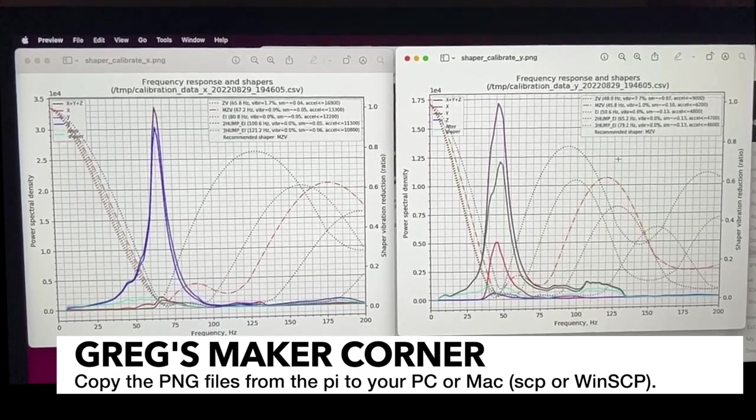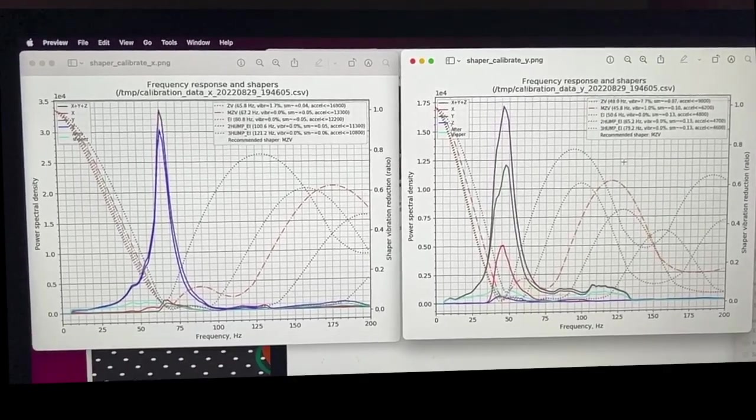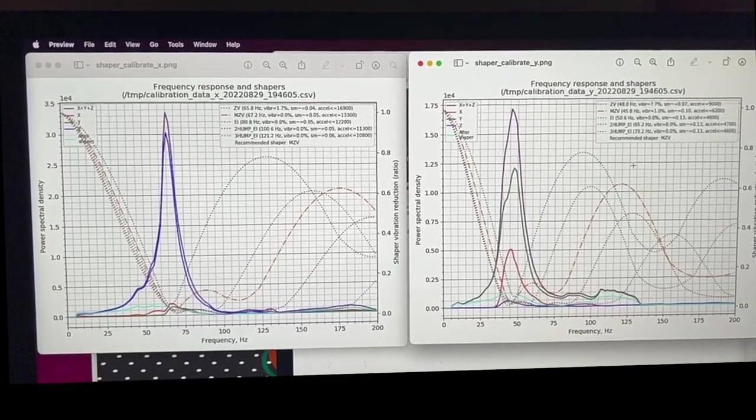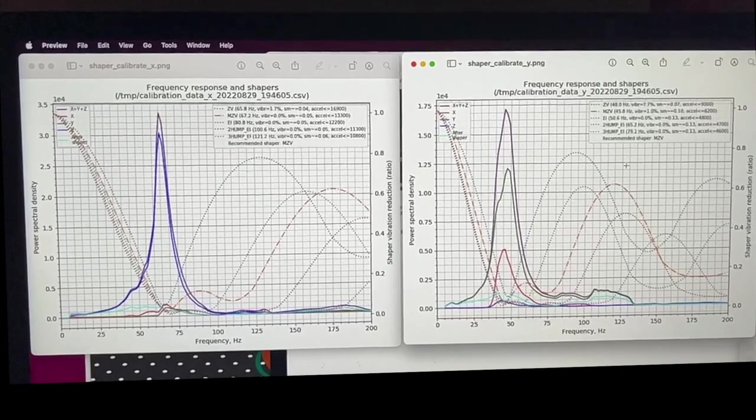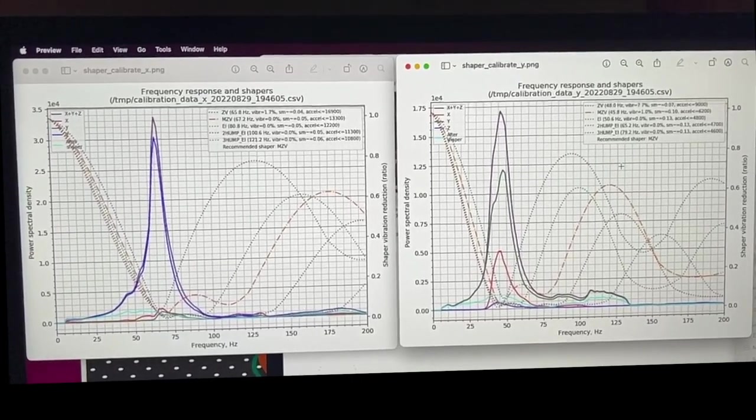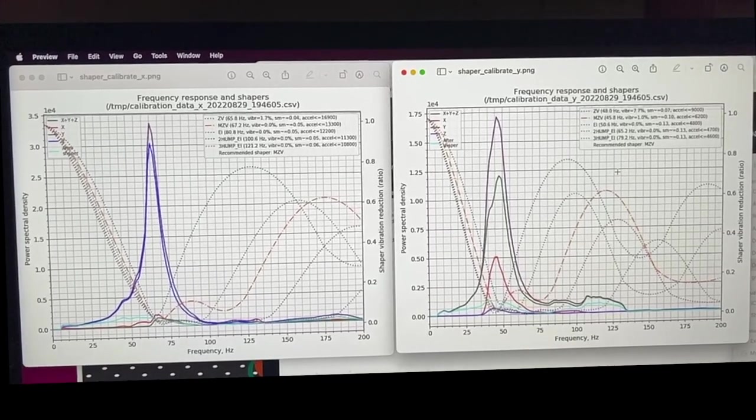You can see that I've got the X on the left and the Y on the right and this is what was generated by the script that I just ran. This looks pretty typical I think but yours is likely to look different. But this gives you a general idea visually just where the resonances are and what the different input shapers look like.